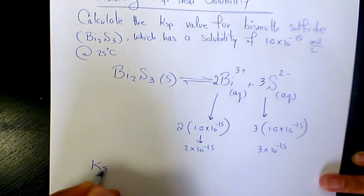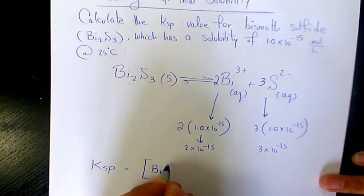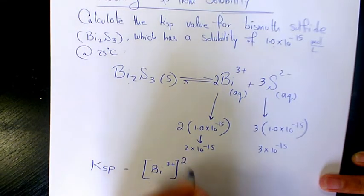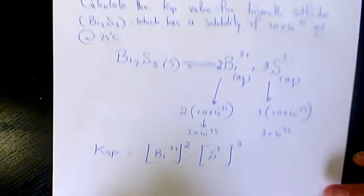Now KSP, which is the solubility product constant, is Bi3+ to the power of 2 times S2- to the power of 3.